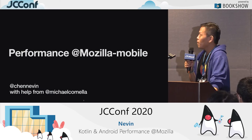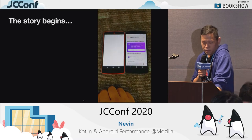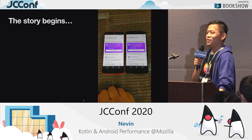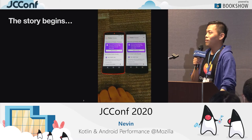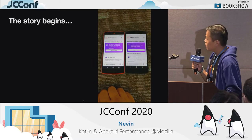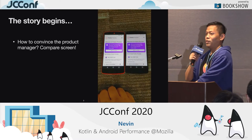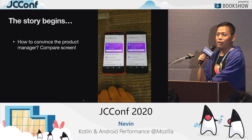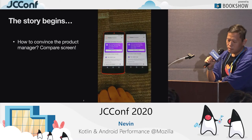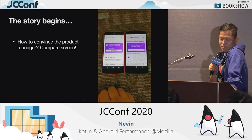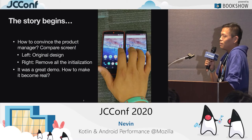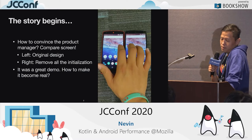The story begins with a question. One day I asked Michael: how do I convince my product manager in Taiwan to put performance into our roadmap? Because performance is always the last thing, the least important thing. He told me we can do a compare screen. The trick he showed me is on the right-hand side, we remove all the initialization code in application onCreate, so the cold start speed is super fast. The product manager was very surprised and asked how we did it. Basically, we just removed the useful code and made the app useless — that's not what we want.